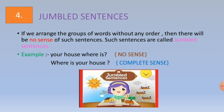Jumbled sentences. If we arrange groups of words without any order, then there will be no sense in such sentences. Such sentences are called jumbled sentences. For example, 'Your house where is?' — there is no meaning in this sentence.